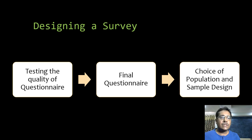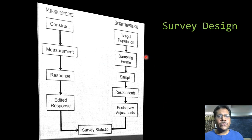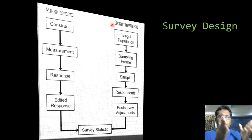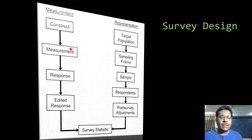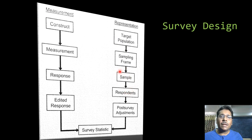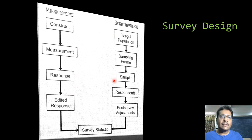After the pre-test we decide on the final questionnaire, then go for the choice of population and sample design. Two things must be kept in mind simultaneously: first, being clear about the construct and the questions to frame; second, being clear about the target population, the sampling frame, the number of respondents, and finally cleaning and analyzing the data. These two processes take place at the same time.